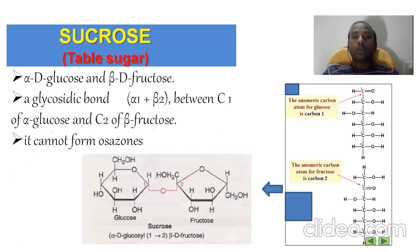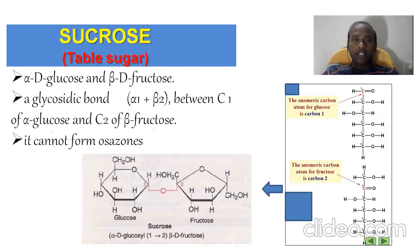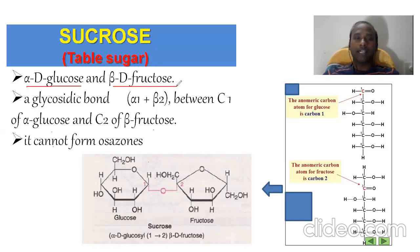Now I will discuss the major examples of disaccharides. First is sucrose, which is a non-reducing disaccharide. Sucrose is made up of two monosaccharide subunits: one is alpha-D-glucose and the second is beta-D-fructose. So the glucose and fructose combination makes sucrose. The glycosidic bond is represented as alpha-1 to beta-2, meaning the C1 position of glucose and the C2 position of fructose are involved in bond formation.